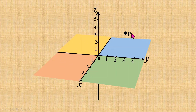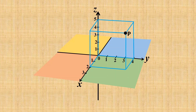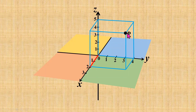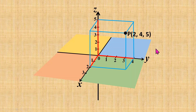Now, let's say I have a point P in this three-dimensional space. To tell the coordinate of this point is not as easy as in a two-dimensional plane, so I'm going to use a cuboid to help. From this cuboid, it is very clear that the distance of this point from the origin along the x-axis is 2 units, along the y-axis is 4 units, and along the z-axis is 5 units. Therefore, the coordinates of the point are (2, 4, 5).